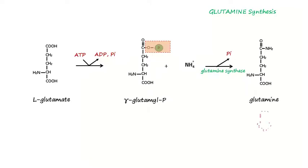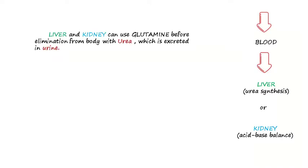Glutamine will be carried by blood. While in circulation, it can be sequestered by the liver for urea synthesis or by the kidney for acid-base balance regulation. Both liver and kidney can use glutamine before elimination from the body with urea, which is then excreted in urine.